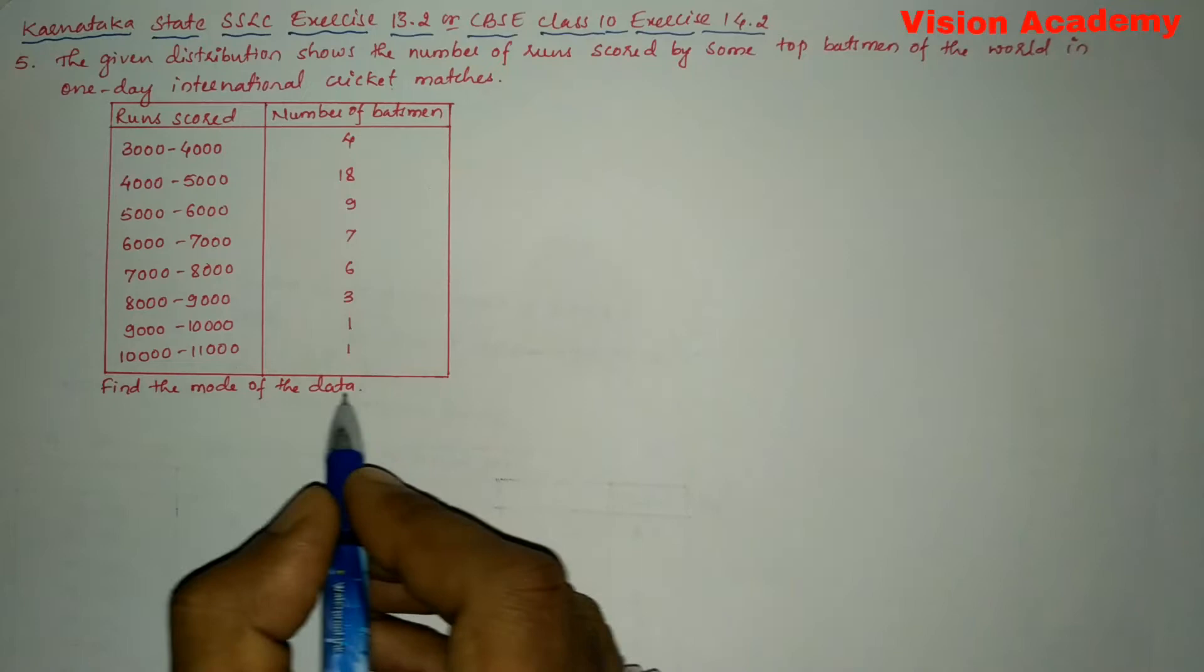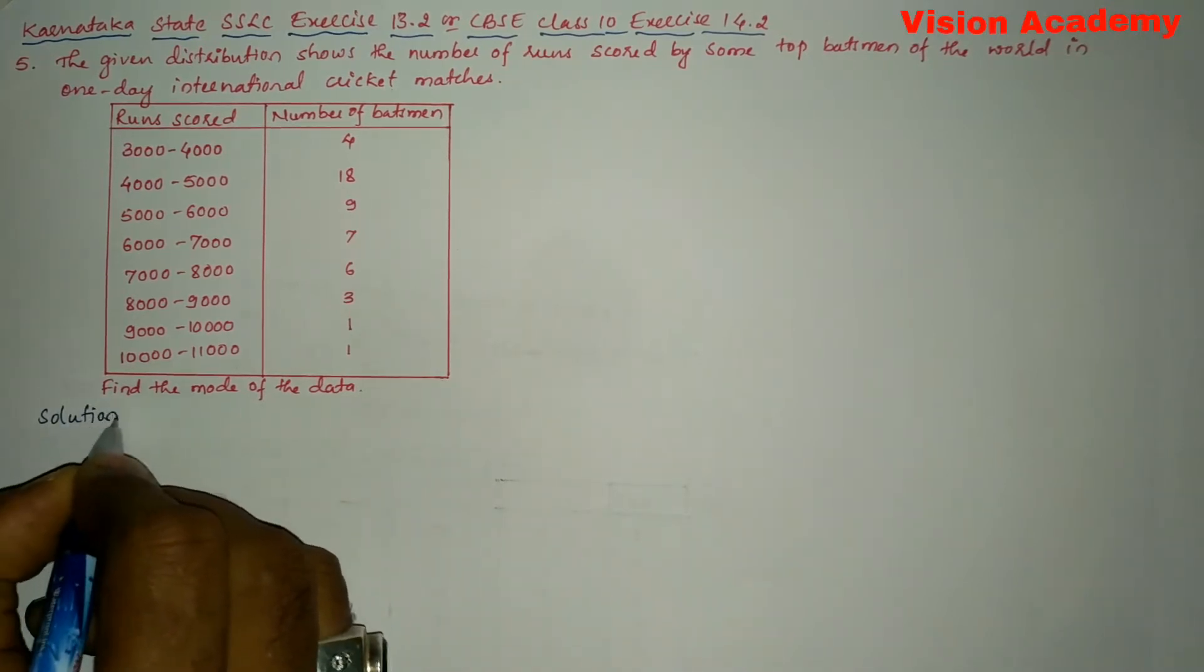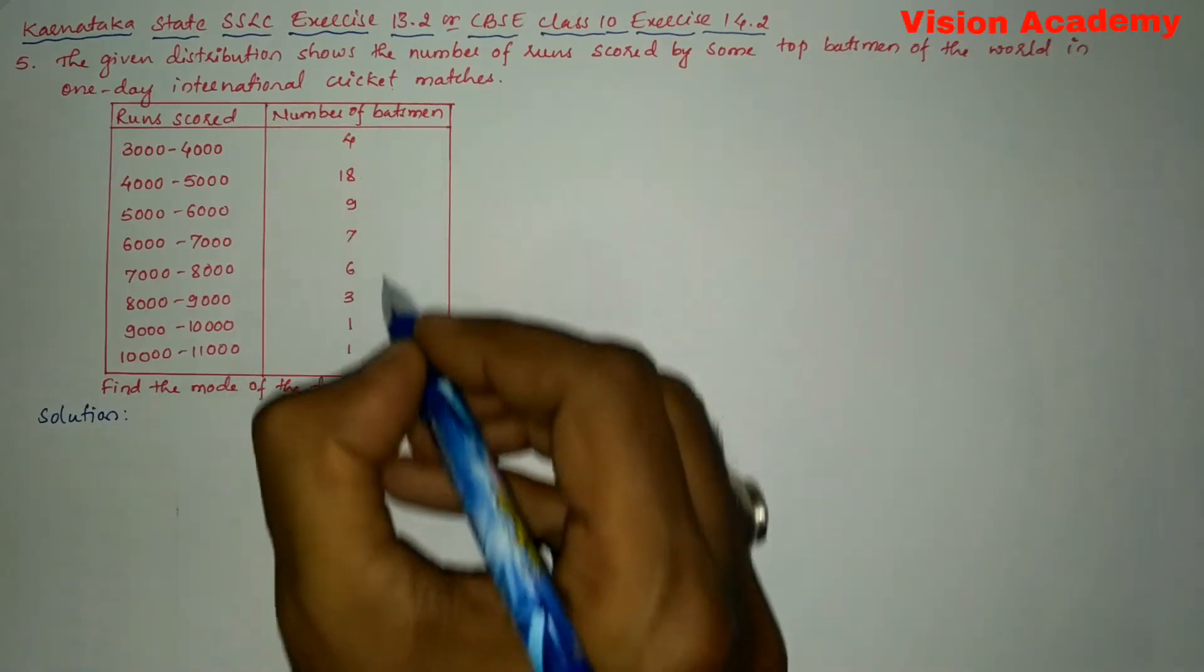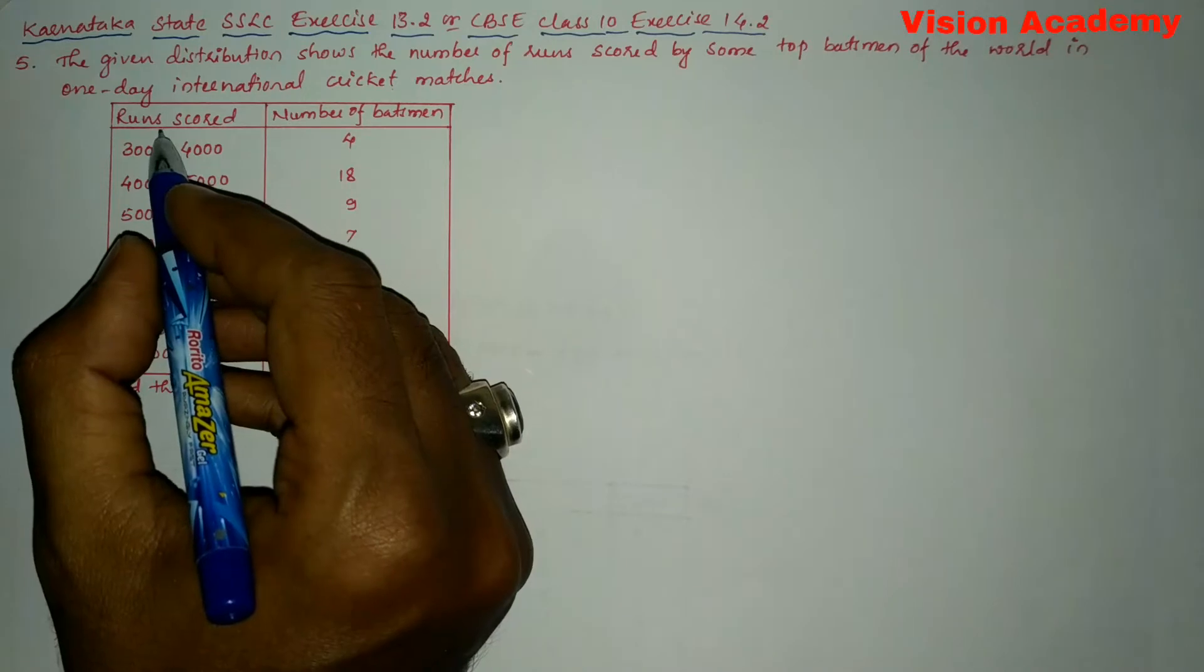Find the mode of the data. Now let us find the solution for the given problem. Here you can see the number of batsmen is taken as frequency and runs scored is taken as class interval.